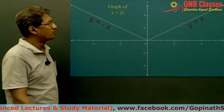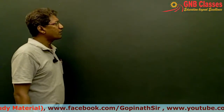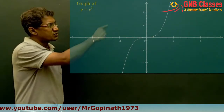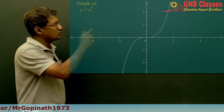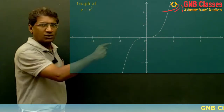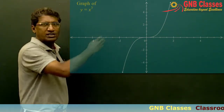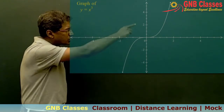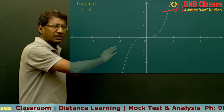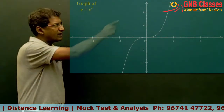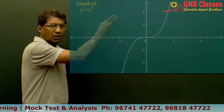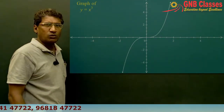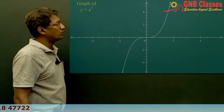The next graph is y = x³. Just remember this curve — it passes through the origin and it is symmetric about the origin. The portion of the graph in the first quadrant is the same as the portion in the third quadrant, which is why this graph is symmetric about the origin.